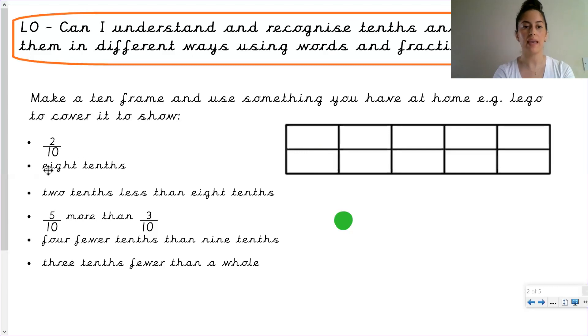Okay next one. Eight tenths. Even though this is written in words it still represents a fraction. Eight tenths. How many parts of my whole do I need to consider? Eight. One, two, three, four, five, six, seven, eight. And that represents eight tenths.